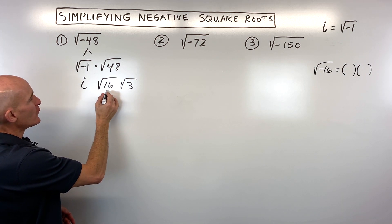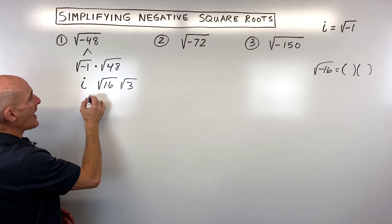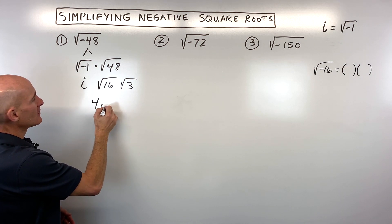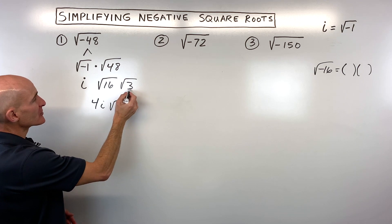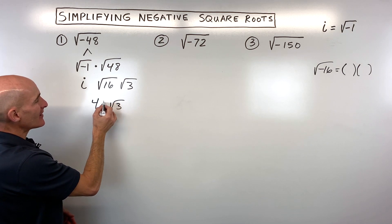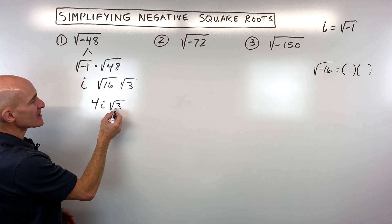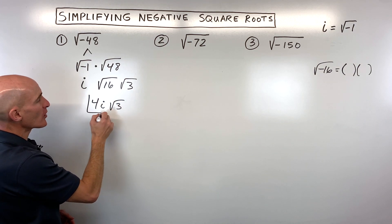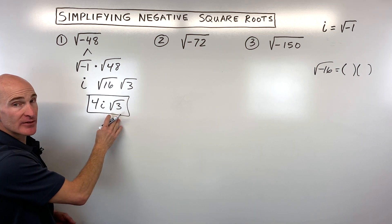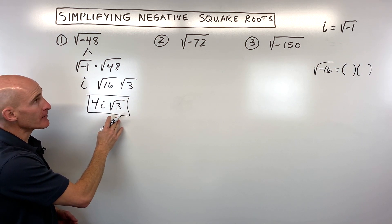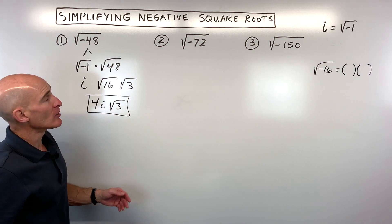So we end up with 4i square root of 3. The square root of 3 is kind of like the remainder — the leftover. This is not a perfect square, so that stays underneath the square root sign.